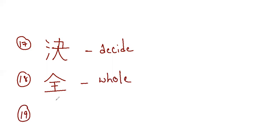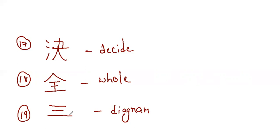Next is the kanji for surface, table, chart, and diagram. It has seven strokes: one, two, three, four, five, six and seven. This is the kanji for diagram.